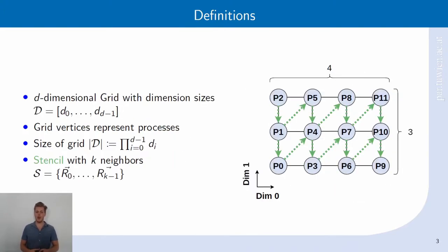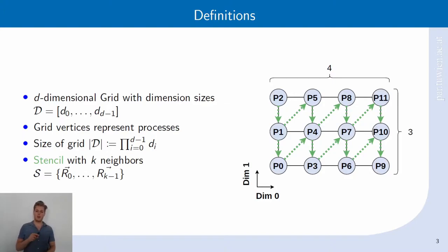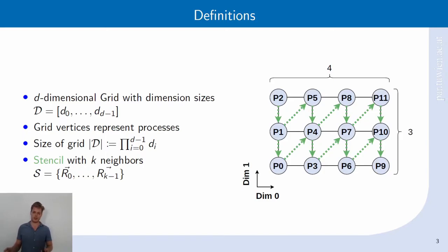When we talk about a grid, a d-dimensional grid is basically defined by its dimension sizes, which go from 0 to d-1. We have an example of a 4 times 3 grid along dimensions 0 and 1. The grid vertices represent the processes. It is very important to note that there is a direct correspondence between the process ID and the coordinates in the grid — process i will always have the same coordinates. For example, process 0 will always have coordinates (0, 0). The size of the grid is the product of all the dimension sizes, which is the number of processes in the grid.